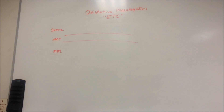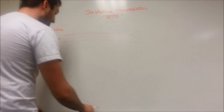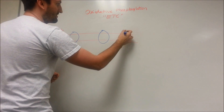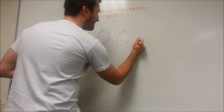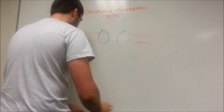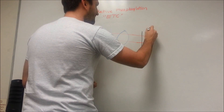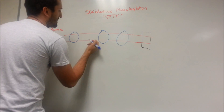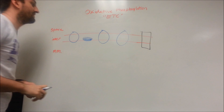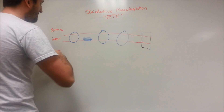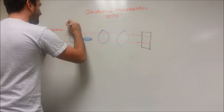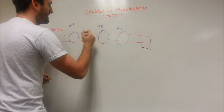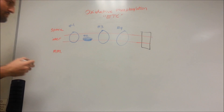The inner membrane has a whole bunch of complexes. We've got Complex I, Complex II — which is kind of the oddball — Complex III, Complex IV, and also a large black blob I'll refer to later as ATP synthase. So we have Complexes I, II, III, and IV all embedded in this inner membrane.